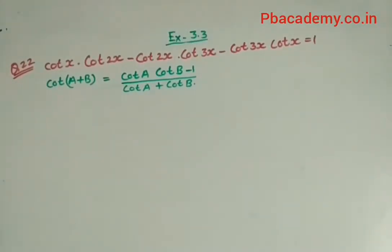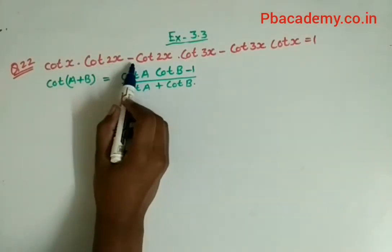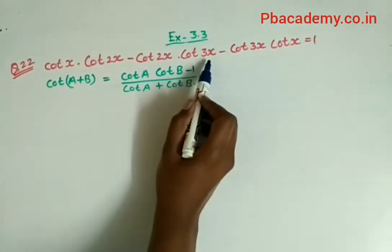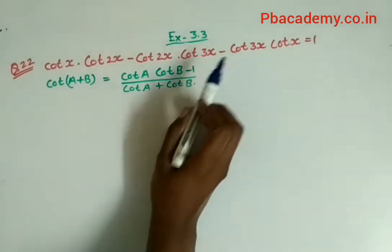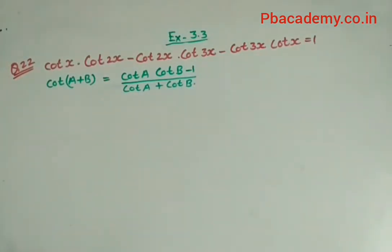In this question we have to prove that cot x · cot 2x - cot 2x · cot 3x - cot 3x · cot x = 1. In this question we cannot directly apply any identity, so what we will try to do is take cot 3x as common and solve.